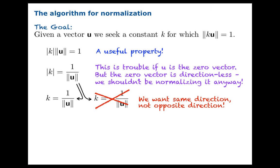So let's ditch that possibility. And we're left with k is 1 over norm u, the reciprocal of the norm of u. And that is our algorithm. That's the way we normalize. We take the reciprocal of the norm and scale it by the original vector. That's our normalization.